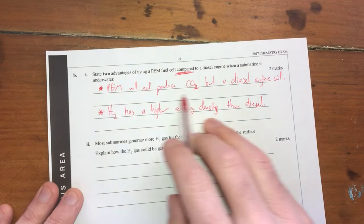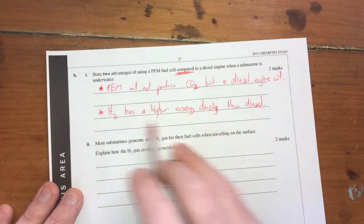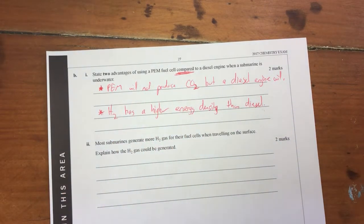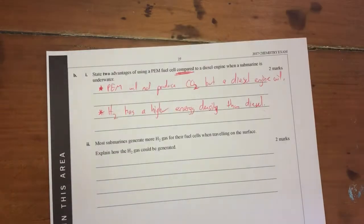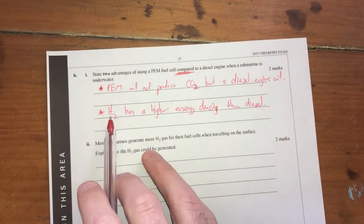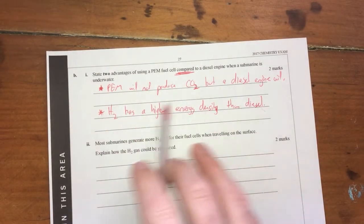So definitely go with these obvious ones, which is the carbon dioxide production. You're not going to do that in a fuel cell, particularly, well, I shouldn't say fuel cell, in a hydrogen fuel cell.